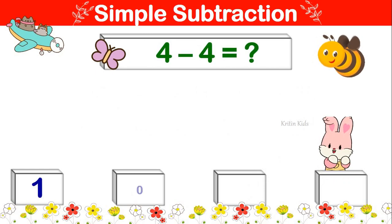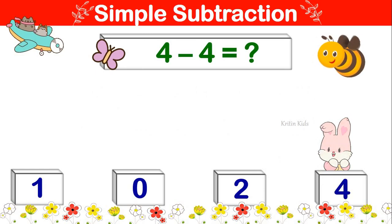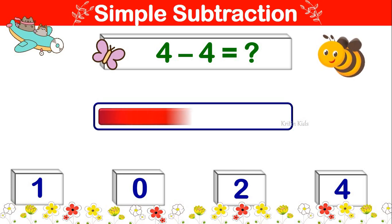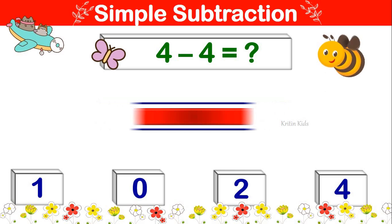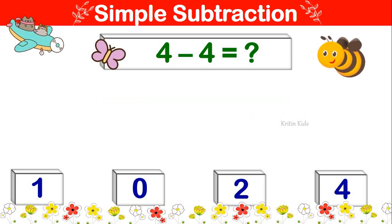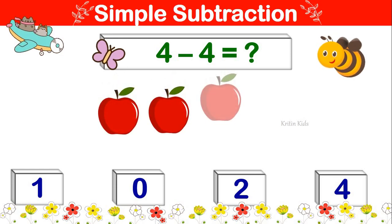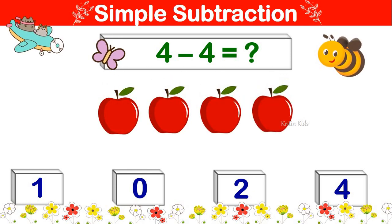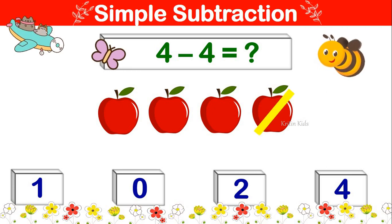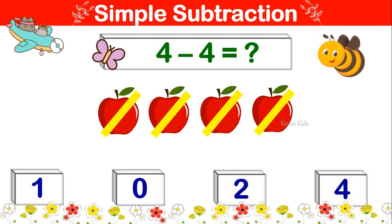4 minus 4 is equal to. Let's take 4 and subtract 4 from it. 1, 2, 3, 4. Now let's subtract 4 from it. 1, 2, 3, 4. Remaining is 0. 4 minus 4 is 0.